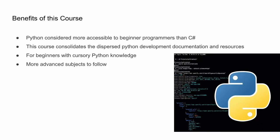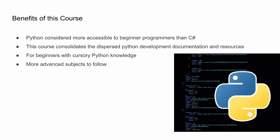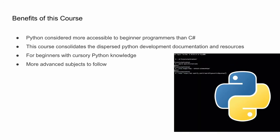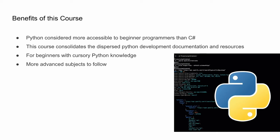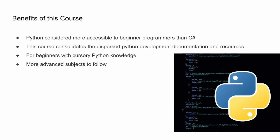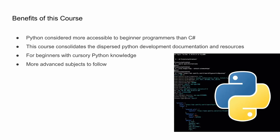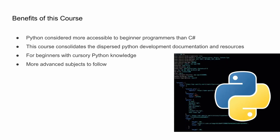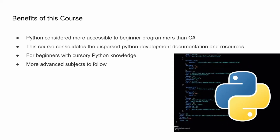What makes this course different than others is that Python is among the most accessible languages for beginners, and is regarded as much more so than C Sharp, which the Revit API is optimized for. There is also an existing development infrastructure to aid development in Python, but it exists in several different places.